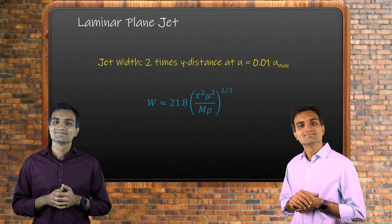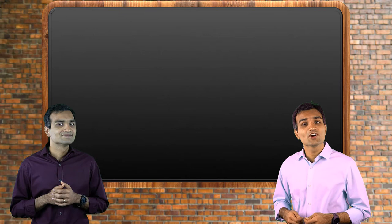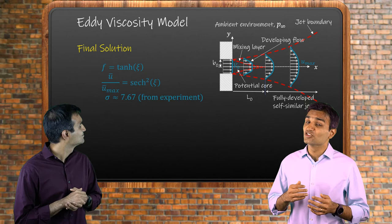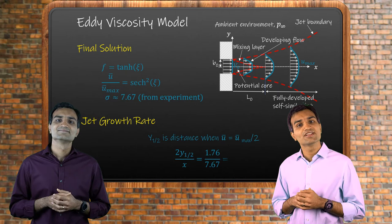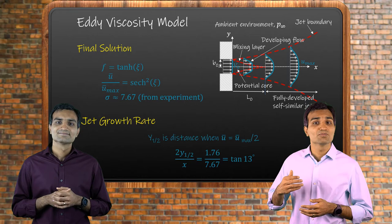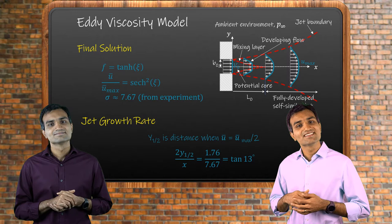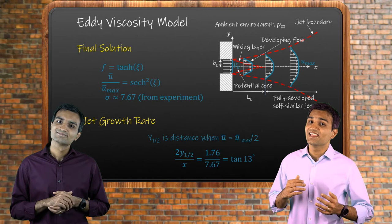Since the velocity of turbulent jets drop asymptotically, the jet width is not very well defined. Therefore, we define half velocity point along the y direction where the jet velocity becomes half of its maximum value at the jet axis. Using this, the jet growth rate is estimated as tan 13 degrees and is independent of Reynolds number.